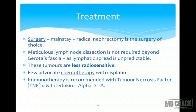These tumors are less radio-sensitive. Few advocate chemotherapy, but these tumors are not very chemo-sensitive; however, some surgeons have tried cisplatin. What is important and interesting in the treatment is the use of biological modifiers or immunomodulators — immunotherapy. This is recommended with tumor necrosis factor alpha (TNF-alpha) and interleukin-2 alpha. Both have impressive outcomes, especially when used in combination, giving a synergistic, much more positive response.